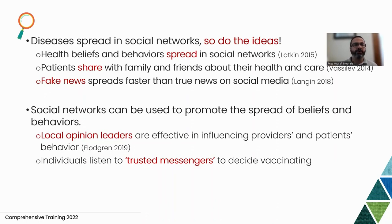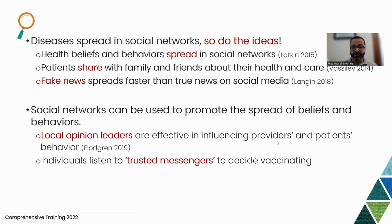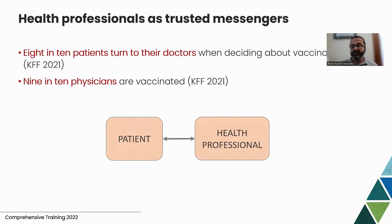Social contagion works for both valid information and fake news — misinformation spreads faster in social networks, mostly online and in social media. Social networks can be used as interventions to promote the spread of healthy beliefs and behaviors. Local opinion leaders trusted by community members are effective interventions for improving health care behaviors and beliefs. In the context of COVID-19 vaccine, trusted messengers are people trusted by community members who talk with them about getting vaccinated.